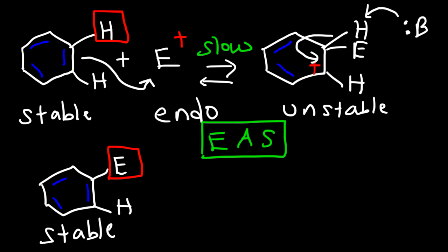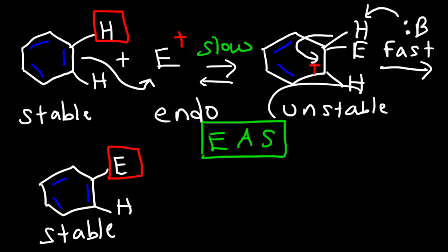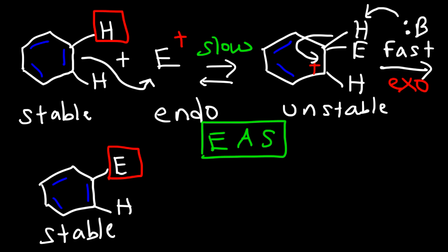The second step for this process is fast because we're going from an unstable compound to a stable compound, and also that step is exothermic. Energy is going to be released because we're going from a high energy compound to a low energy compound. So those are some things to keep in mind.